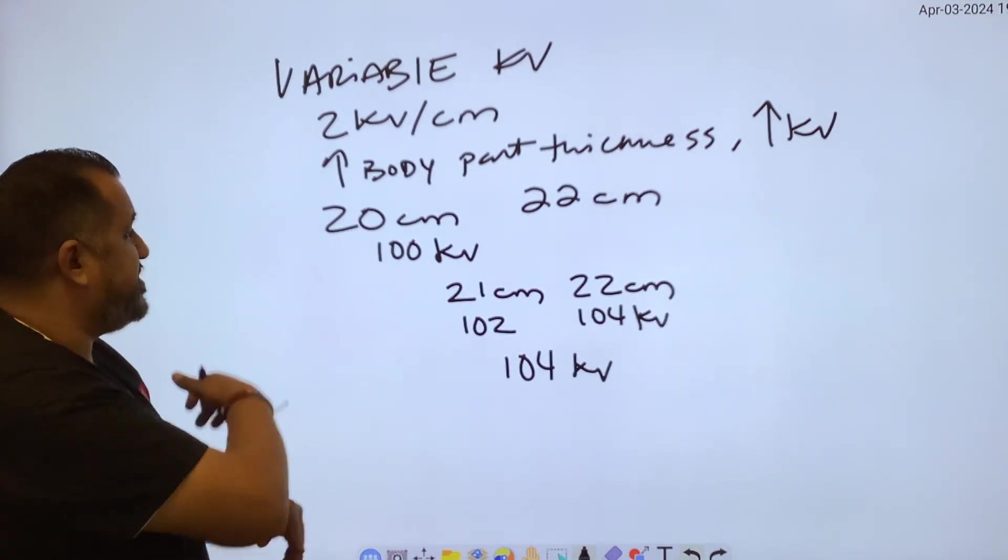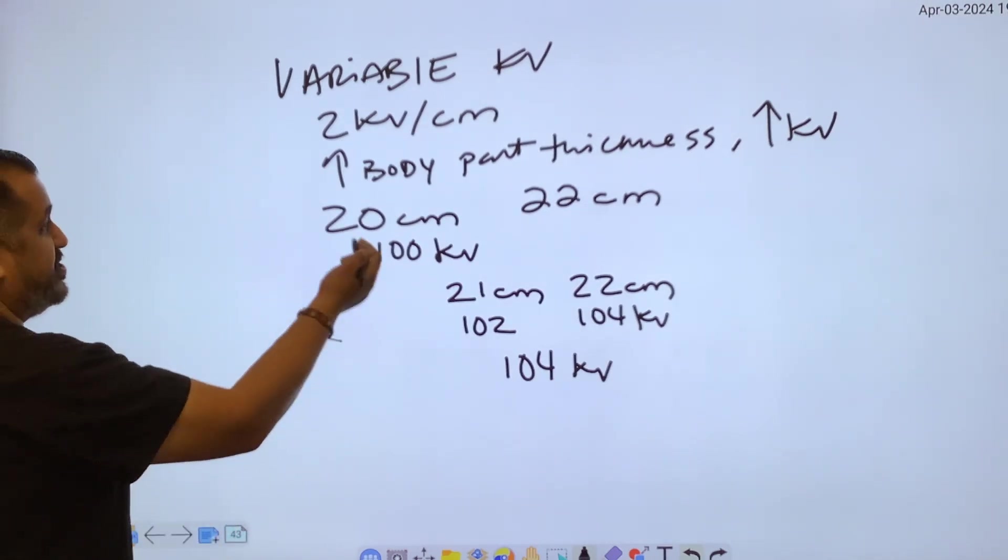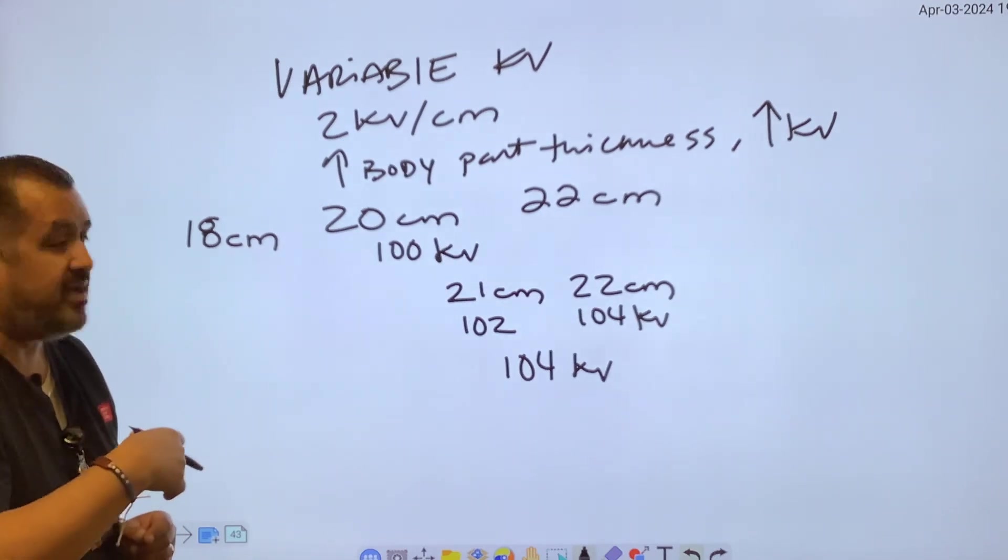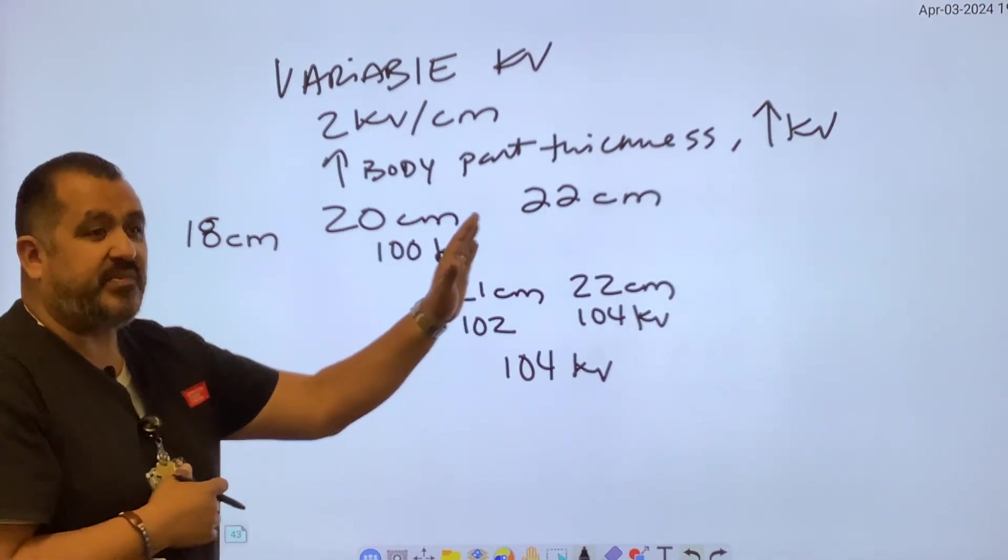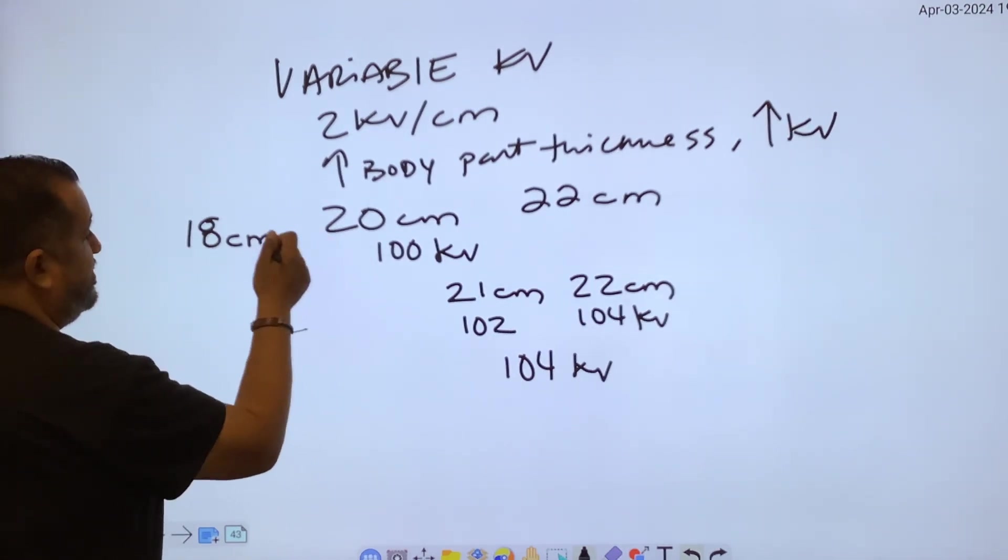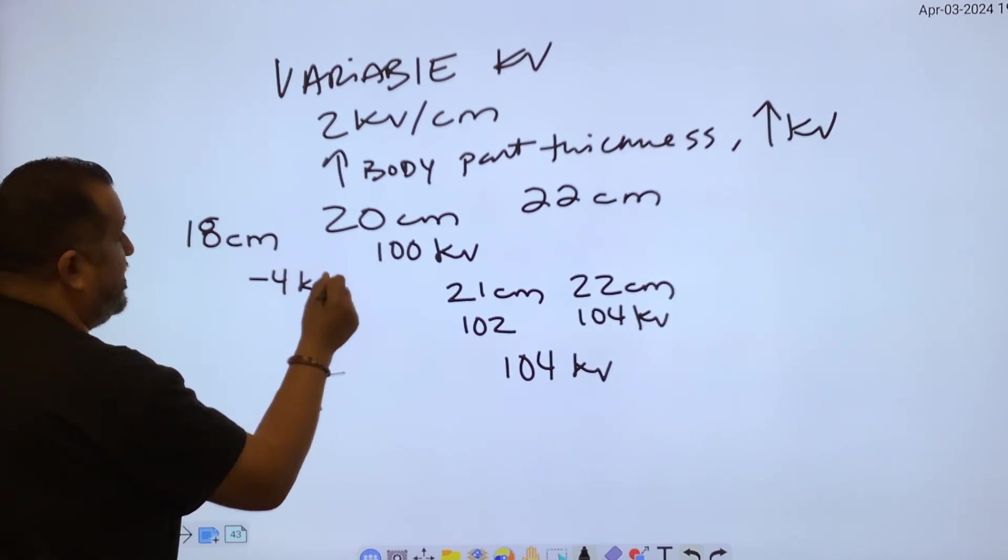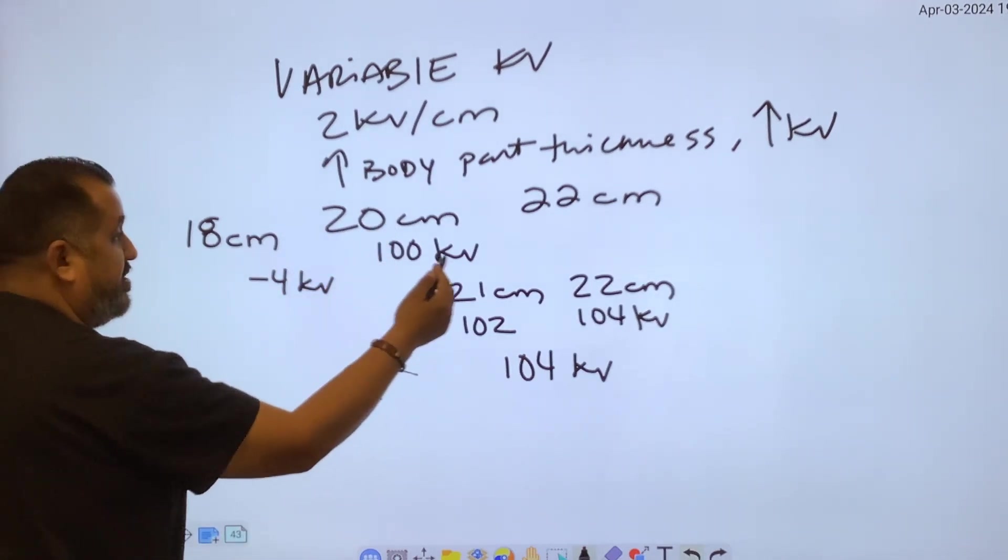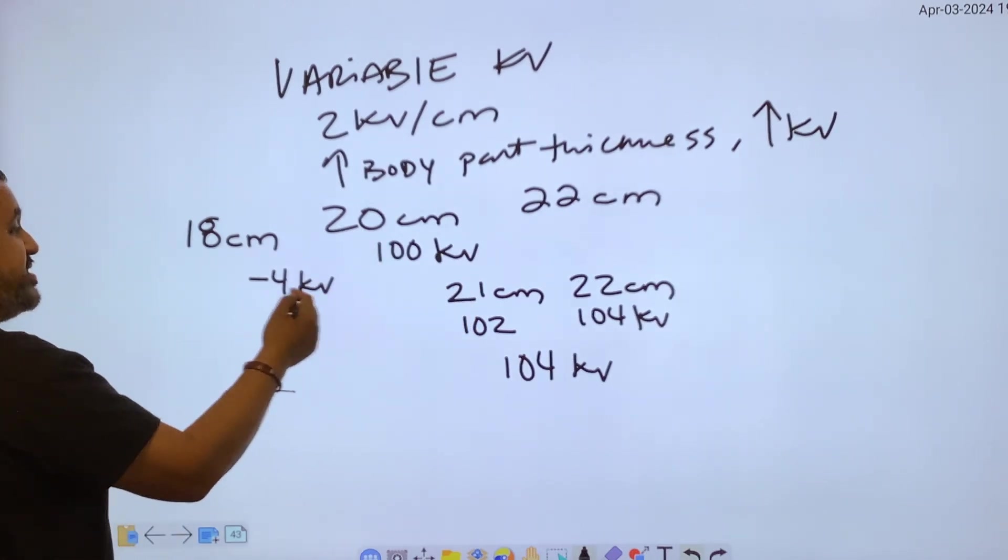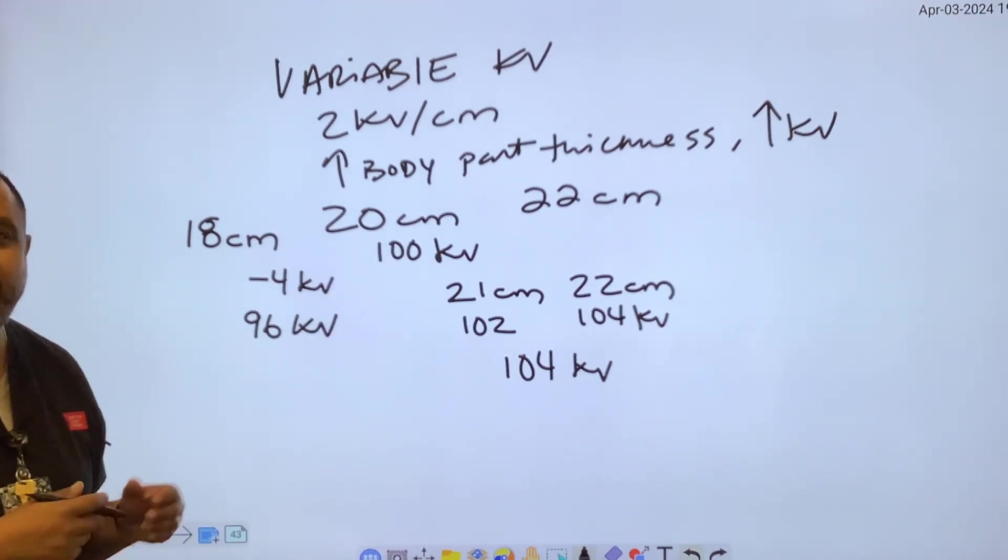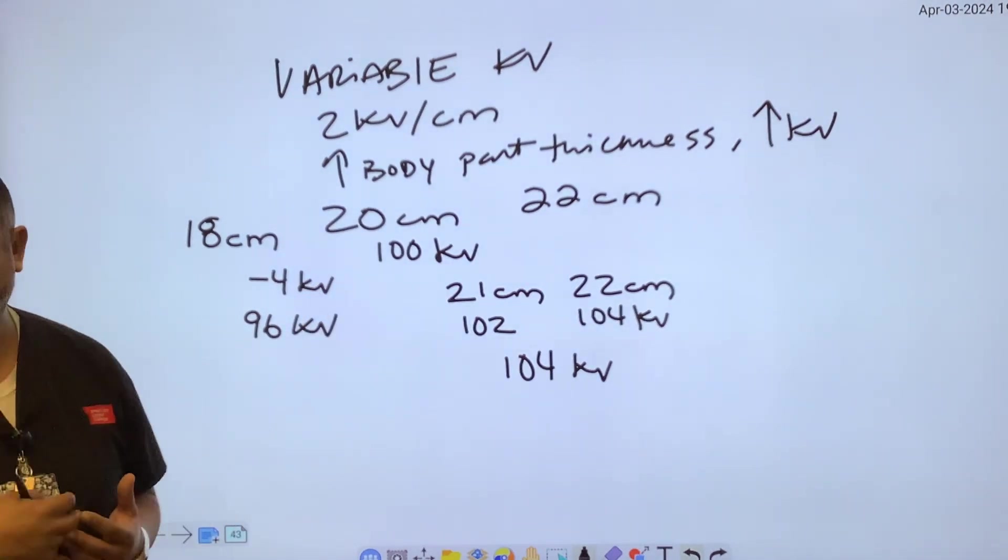Now, the opposite is also true. Let's say you have a body part thickness that is two centimeters smaller. Well, instead of adding, you're going to be subtracting. So you have the difference between 18 and 20 centimeters is two, so you're going down 4 KVP. If you have a body part at 20 centimeters that uses 100 KV, at 18 centimeters you're going to be using 96 KV. So it's going to go either up or down.